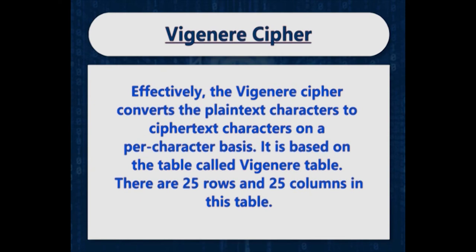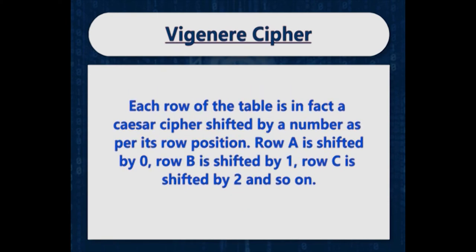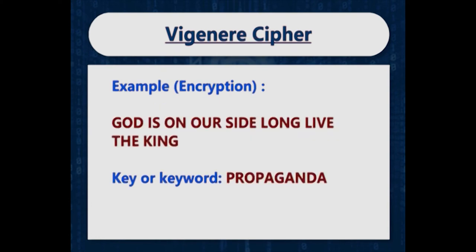The Vigenère cipher converts plaintext characters to ciphertext on a per-character basis. It is based on a table called the Vigenère table, which has 26 rows and 26 columns. Each row of the table is a Caesar cipher shifted by a number as per its row position — row A is shifted by 0, row B is shifted by 1, row C is shifted by 2, and so on.